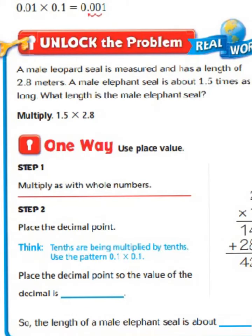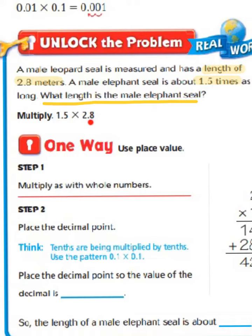Let's take a look at our word problem of the day. A male leopard seal is measured and has a length of 2.8 meters. A male elephant seal is about 1 and a half times as long. What length is the male elephant seal? The important information is that the leopard seal is 2 and 8 tenths meters, and the elephant seal is about 1 and a half times as long. We need to multiply 1 and 5 tenths times 2 and 8 tenths.